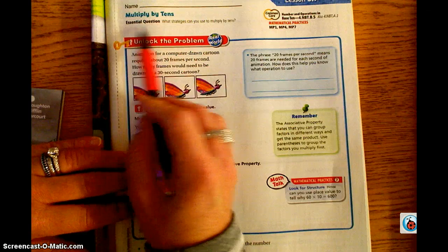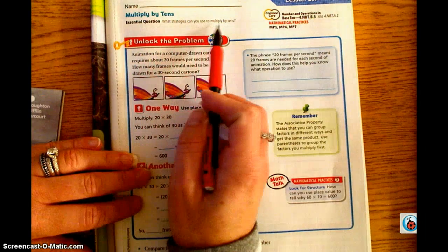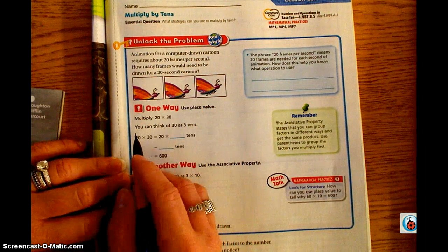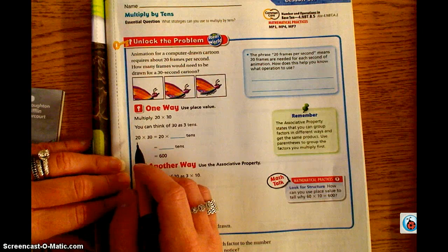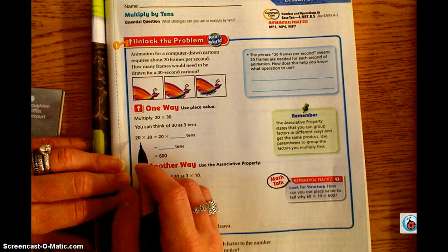At the top we're going to first identify the essential question which is: what strategies can you use to multiply by tens? And if you remember back to chapter 2, we went through multiple strategies in order to perform multiplication. You're going to see some of those strategies today during this lesson.